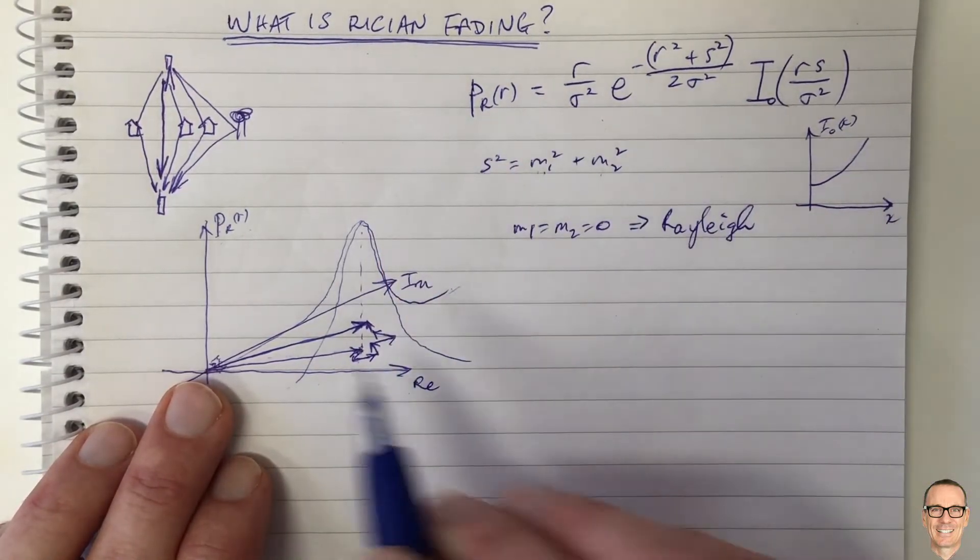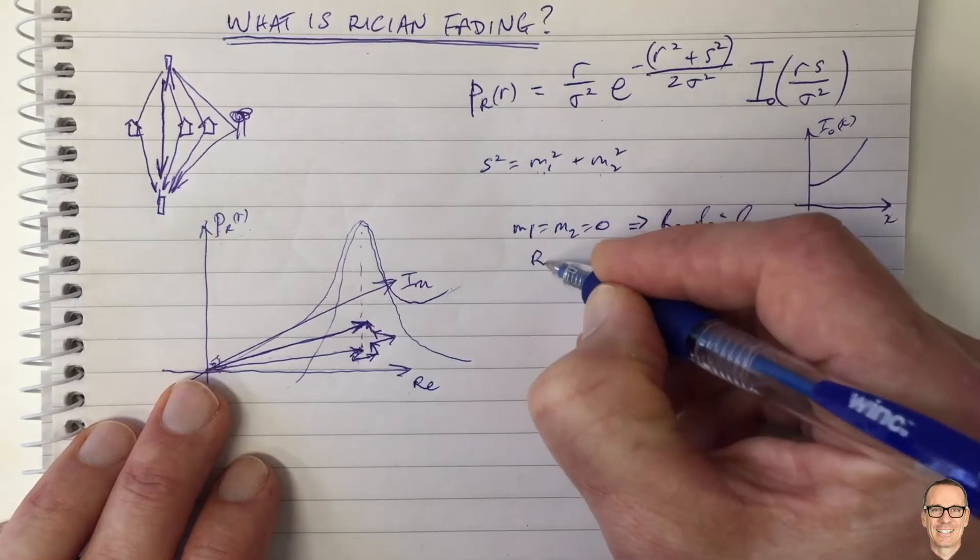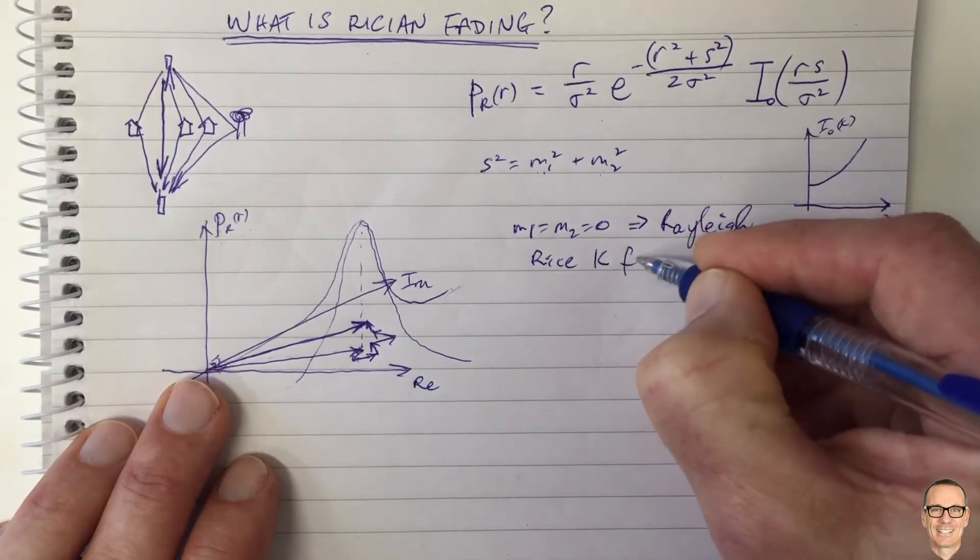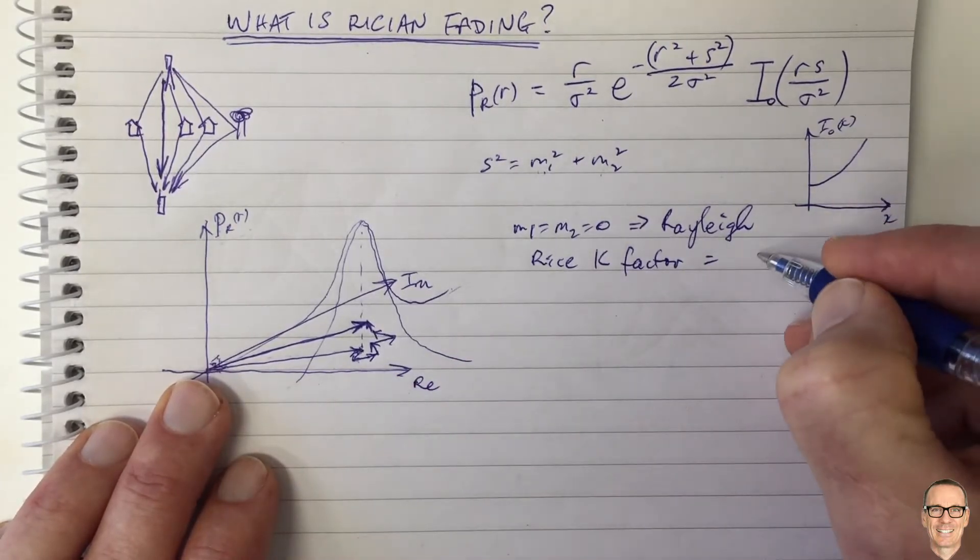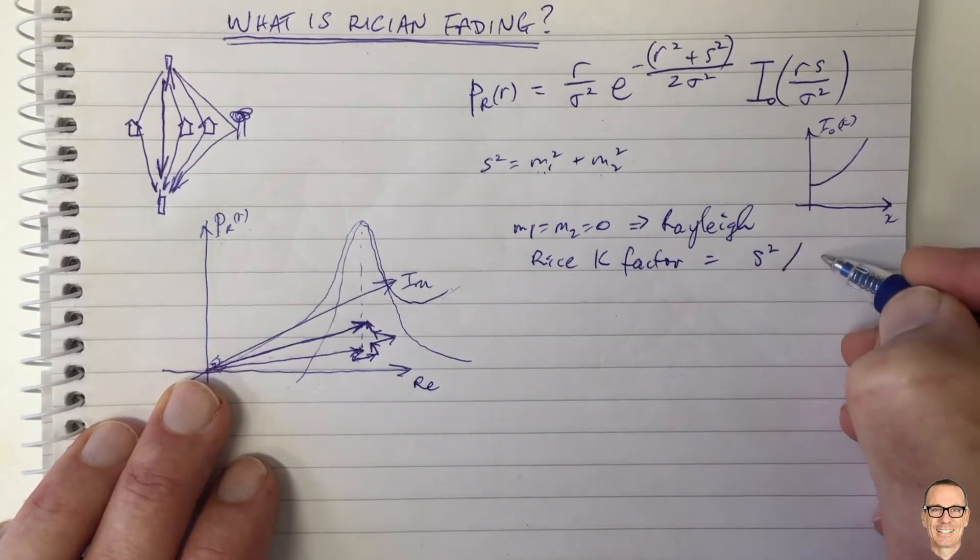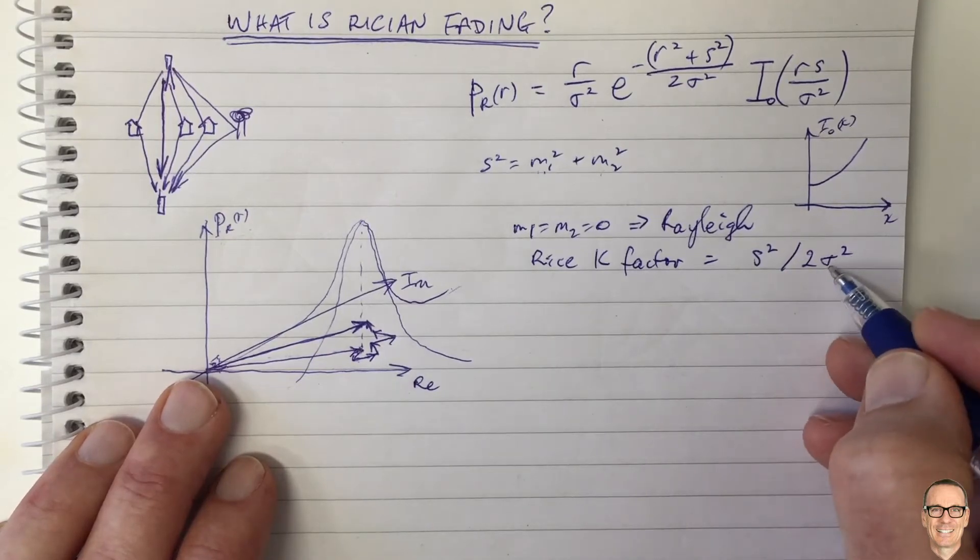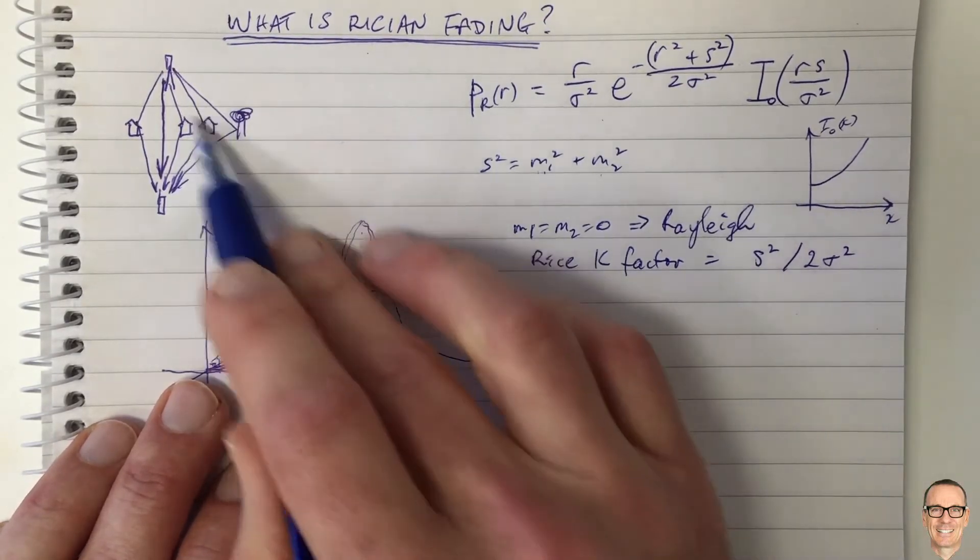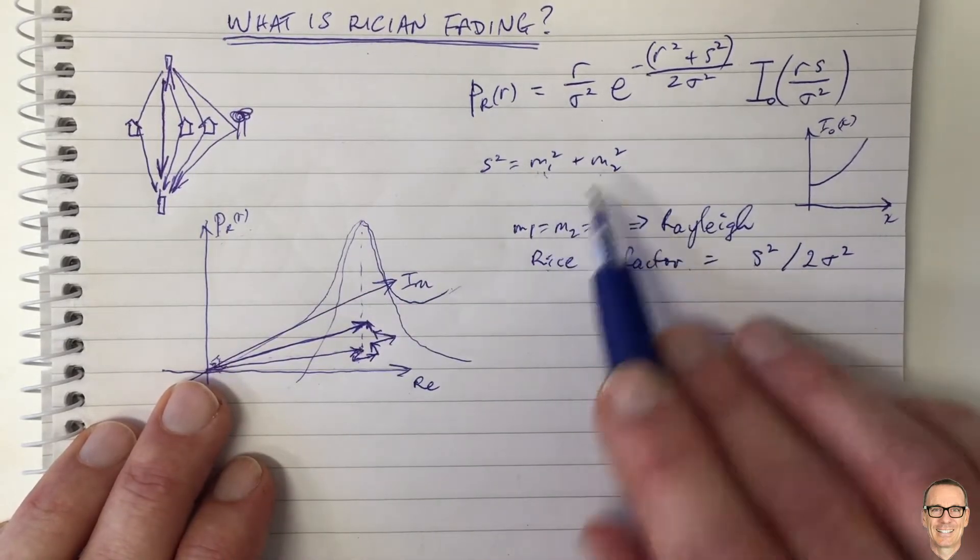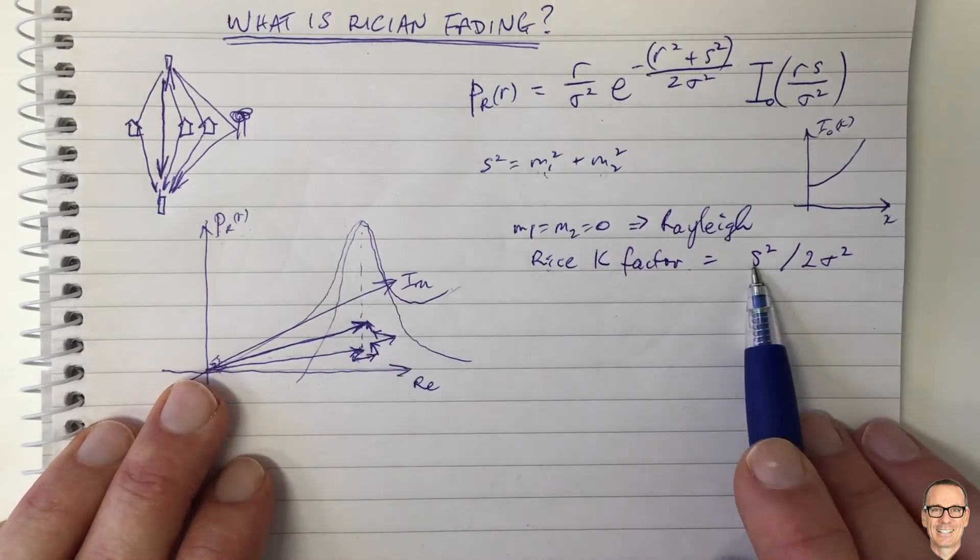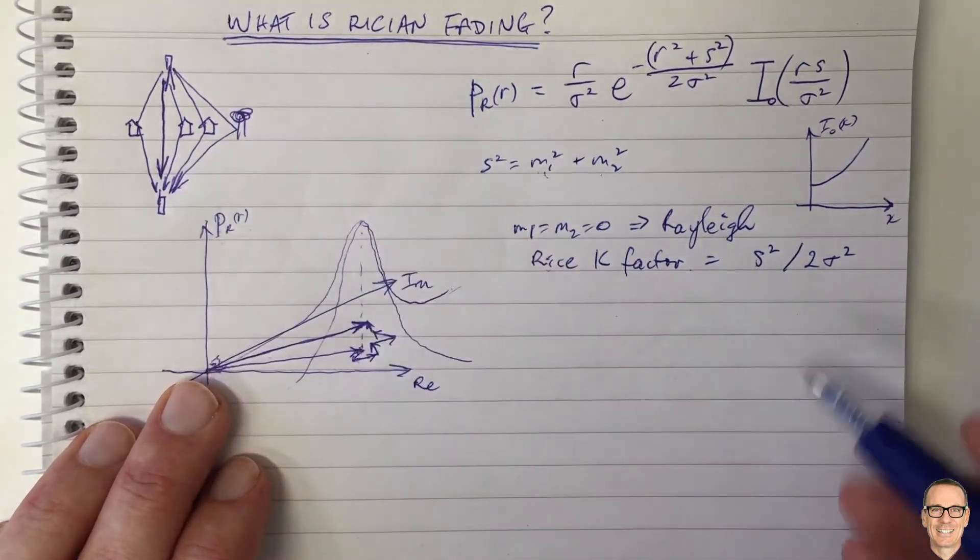This is now the situation with Rician, and we have Rayleigh as a special case. What are some other things with Rician? Well, sometimes we're interested in the Rice factor, or sometimes called the Rice K factor. This is a factor and a representation of the power that's in the line of sight path, s squared, divided by the power that's in the reflected paths, which is 2 sigma squared. Again, you can look back to the Rayleigh case to see that that is the power in all of the Rayleigh components. So this is the Rice K factor, and clearly if m1 and m2 are big, so if the dominant path is strong, then the Rice K factor is large. This gives us an indication of the dominant path in comparison to the reflected paths.